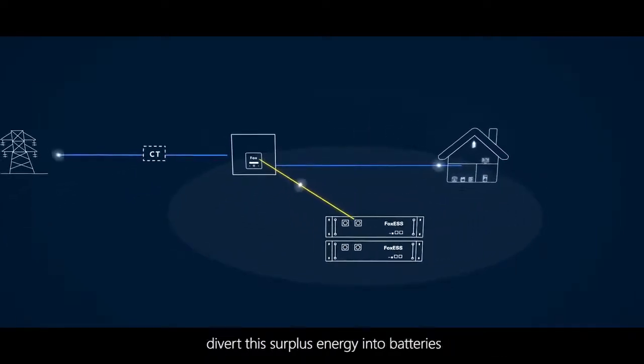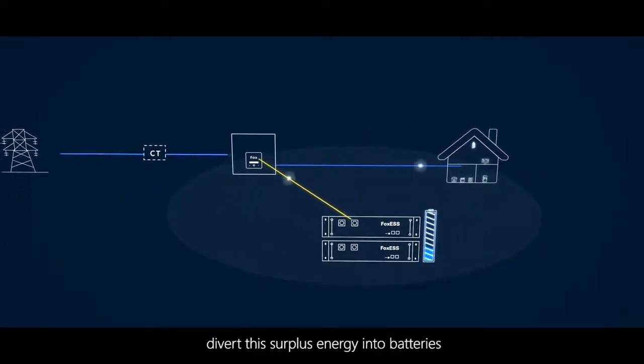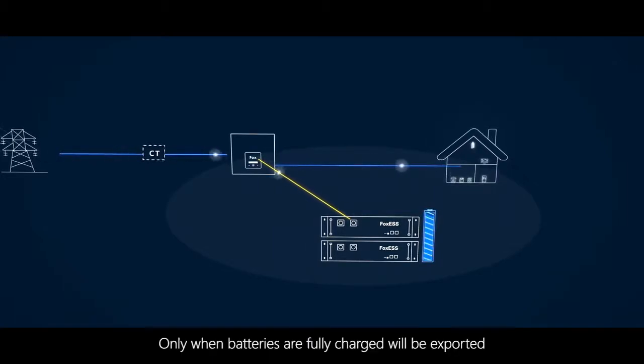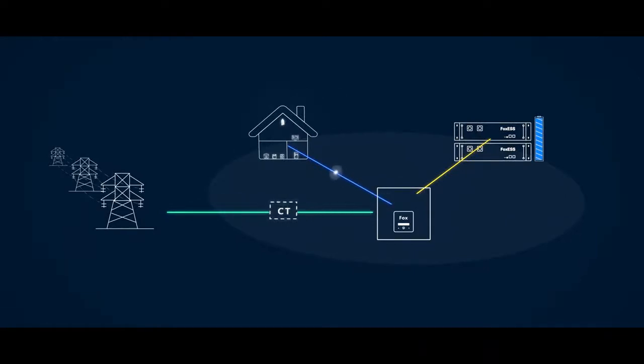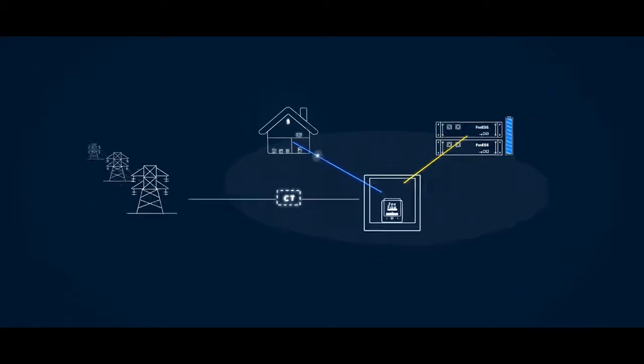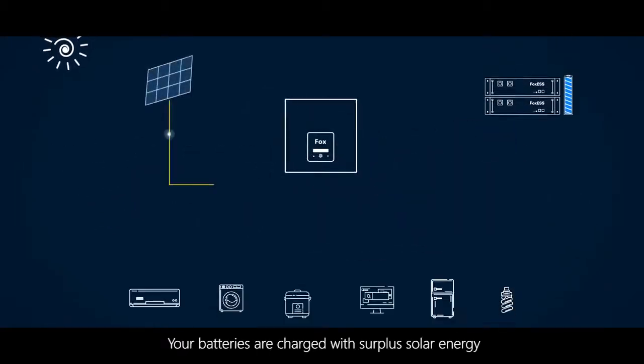The system diverts this surplus energy into batteries. Only when batteries are fully charged will energy be exported. If local regulations prevent export, it can be limited via the hybrid settings. Your batteries are charged with surplus solar energy.